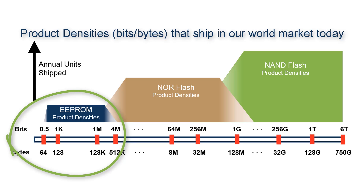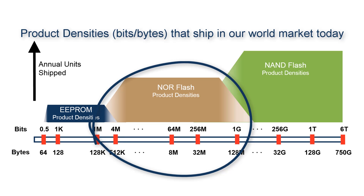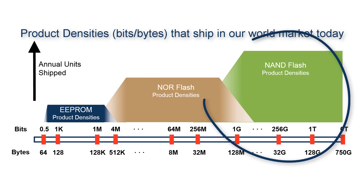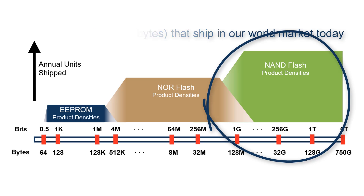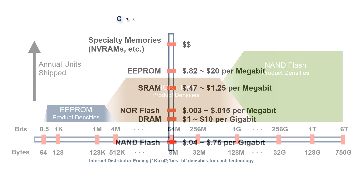Here is a rough density chart: EEPROM dominates only at the very bottom, where the unit price difference is small and the byte-write capability is important. NOR flash is here in the middle, where the boot code densities fall. And NAND flash stretches up as far as the newest technology can reach, in gigabits.